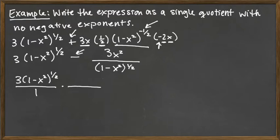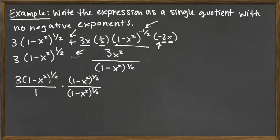Since that's the denominator we need, we put it there. But we can't just create a new denominator — we have to balance it by putting it on the top too. So 1 minus x squared raised to the 1 half appears on both the top and the bottom, which means we've multiplied by a fancy way to write 1. We do that so we can then combine our fractions.